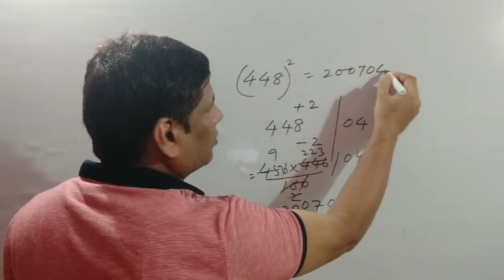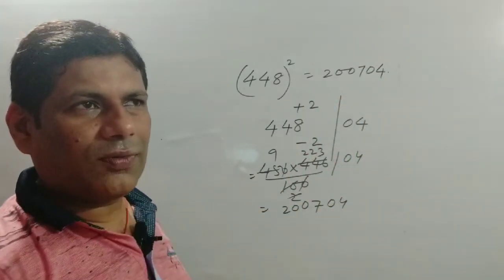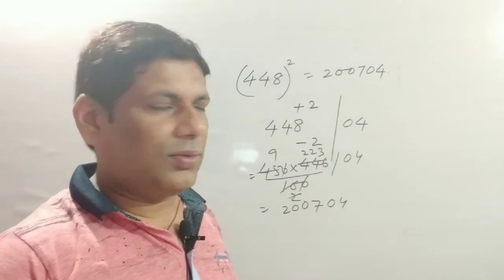Add 04 to get 200,704. So the square of 448 is 200,704. In this way you can calculate the square of any three-digit number.